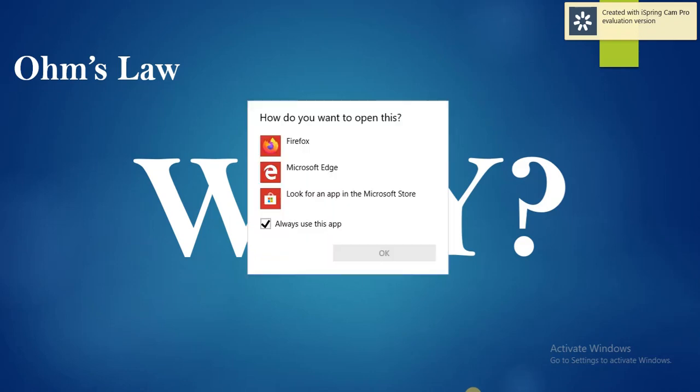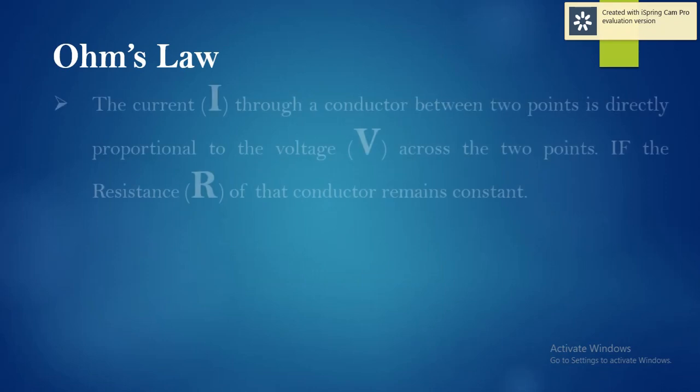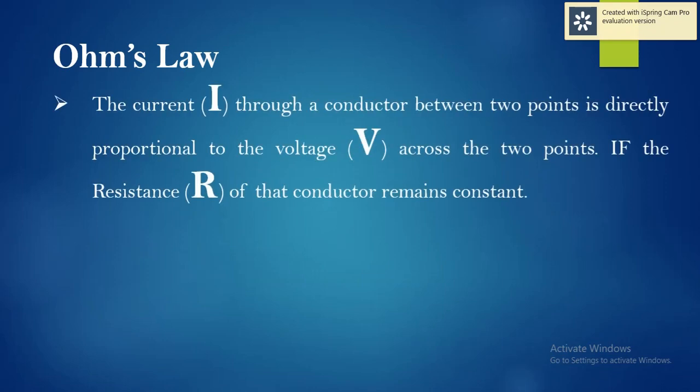So let's begin. Ohm's law states that the current I through a conductor between two points is directly proportional to voltage V across the two points if the resistance of that conductor remains constant. Point A and B are those two points and voltage across them is denoted by V_AB.